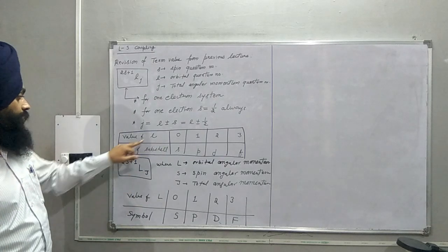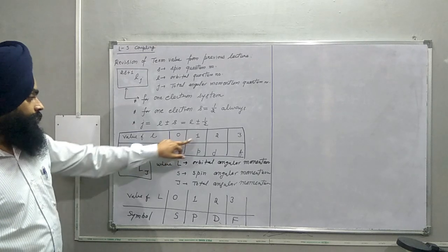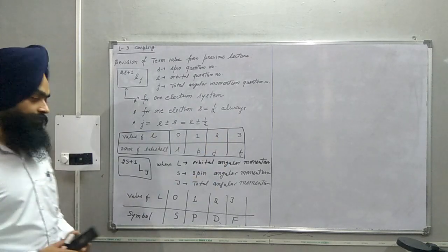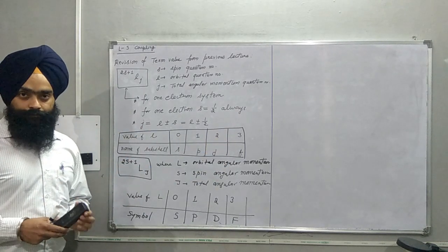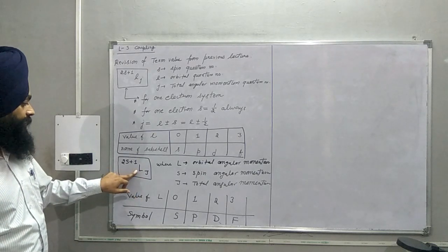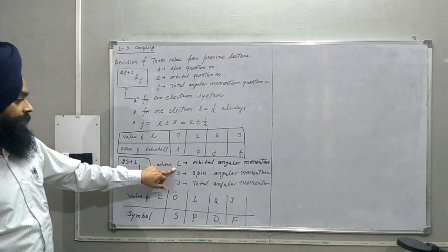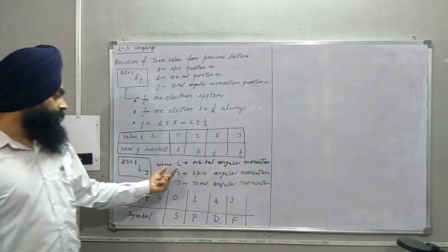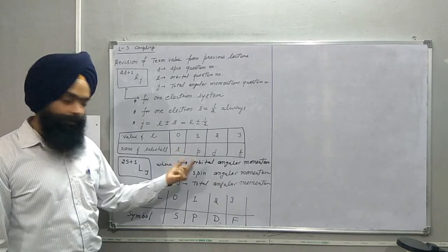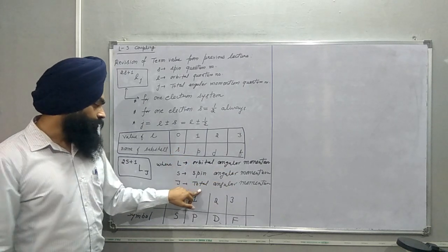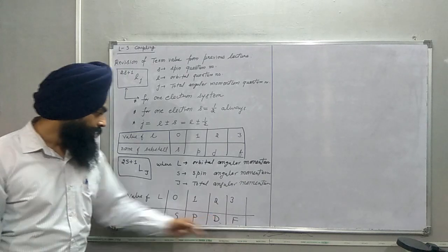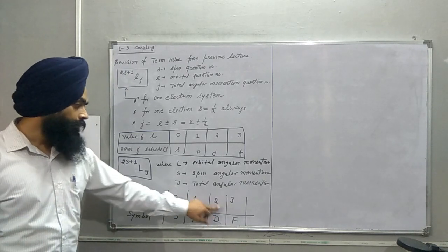For the orbital quantum number L: for L=0 we have the s subshell, for L=1 we have p, for L=2 we have d, and for L=3 we have f. Similarly, for a multi-electron system the same formula is written in capital letters: 2S+1 L_J, where capital L is the orbital angular momentum, capital S is the spin angular momentum, and capital J is the total angular momentum. The symbols S, P, D, F correspond to L equal to 0, 1, 2, 3.